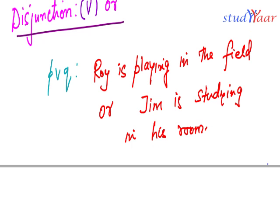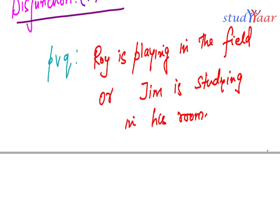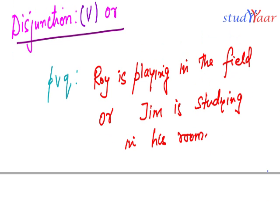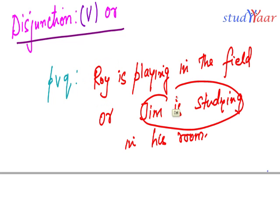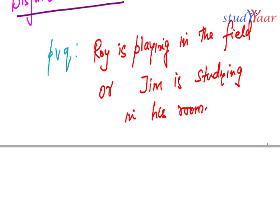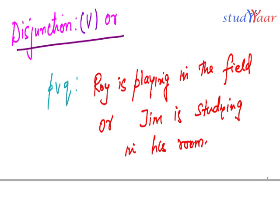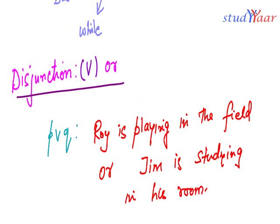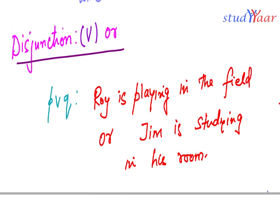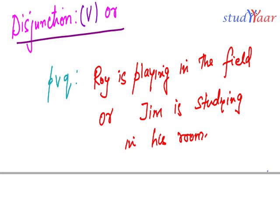Here 'or' is used in an inclusive sense, meaning either Roy is playing in the field, or Jim is studying in his room, or both Roy is playing in the field and Jim is studying in his room.